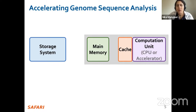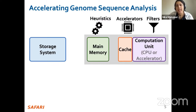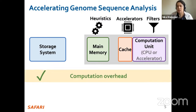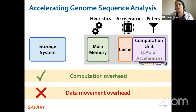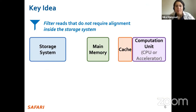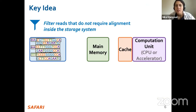Prior works have tried to improve read mapping through efficient heuristics, hardware accelerators, and various filters that prune reads that do not require expensive computation — at different parts of the stack, whether compute-centric, cache-centric, or through solutions near main memory. While these approaches address computation overhead and data movement in those sections, none of them alleviate data movement overhead from storage. Our key idea is to filter reads that do not require the expensive alignment computation in the storage system to fundamentally reduce data movement overhead of read mapping.